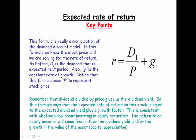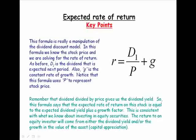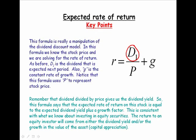So what are the key points? Well, we see that this formula is really a variation or a manipulation of the dividend discount model. We're solving for the expected rate of return. As before, D1 is next period's dividend. P is price. And so D1 over price gives us the expected dividend yield. G is the rate of constant growth.